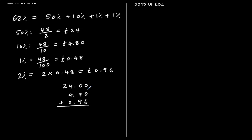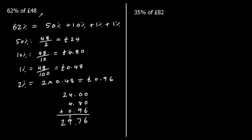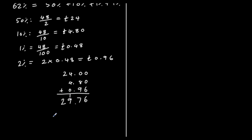Adding those up: 6 in the hundredths, 8 plus 9 is 17, carry one over, 4 plus 4 plus 1 is 9, and we've only got 2 in the tens. So 62% of 48 pounds is 29 pounds 76.